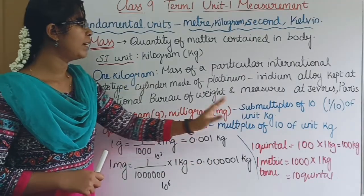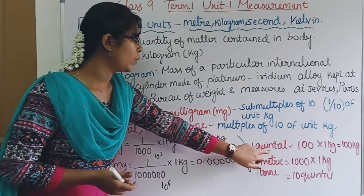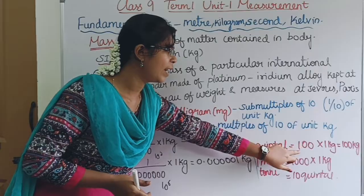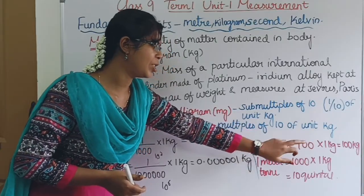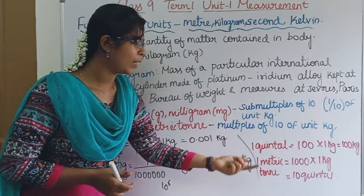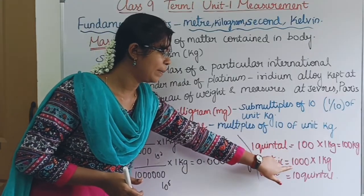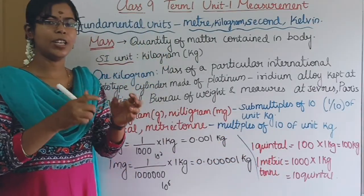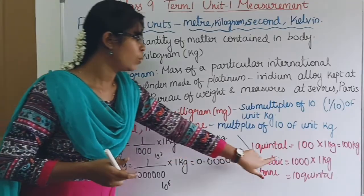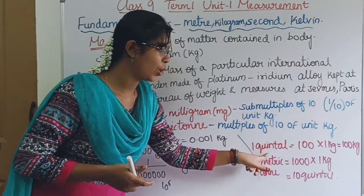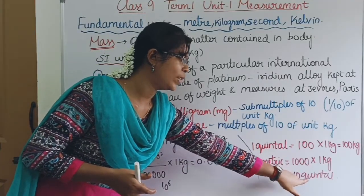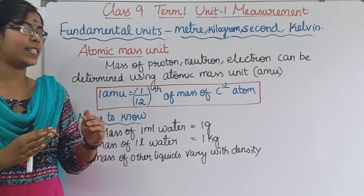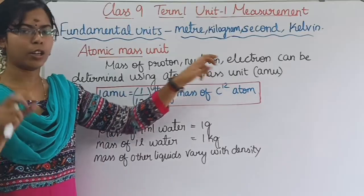1 quintal is equal to 100 kg. 1 metric ton: we multiply by 1,000 kg. So 1,000 kg is equal to 1 metric ton, which equals 10 quintals. And 100 kg is equal to 1 quintal.